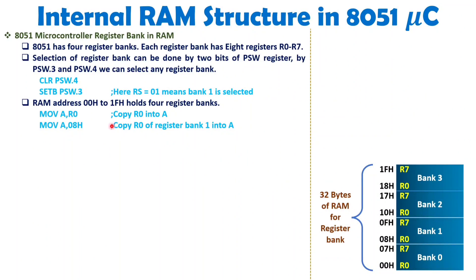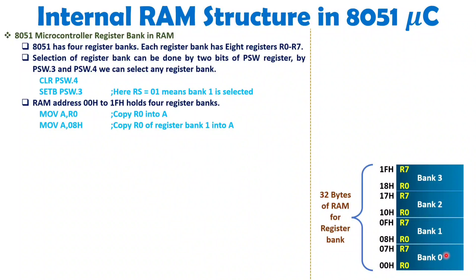When executing instructions there are a few important things to note. For example, when you write MOV A, R0 you are copying the data of R0 into A — but which R0? You need to know what the RS bits are set to. By default they are 00 for Bank 0, so it takes address 00h, meaning R0's data from Bank 0.